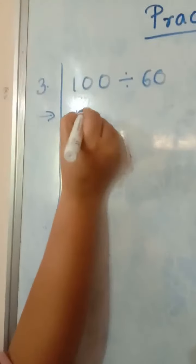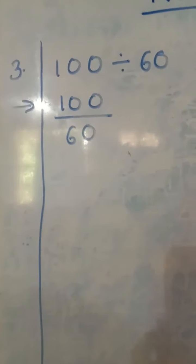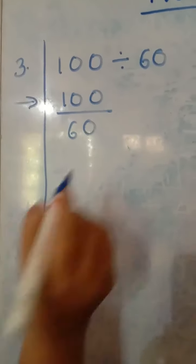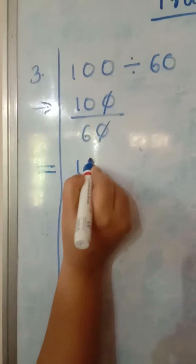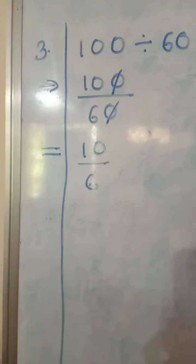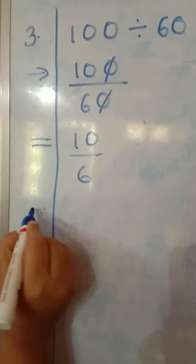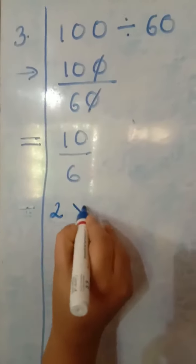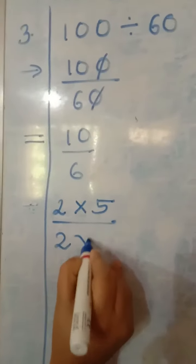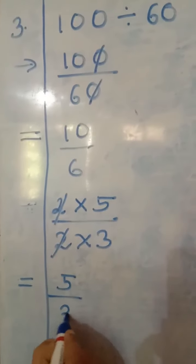Now we go to the third sum. First write it in fraction form: 100 upon 60. Here there are zeros, so first cancel the zeros to simplify the fraction — one zero with the other zero — leaving 10 upon 6. There is no negative sign, so it is simple division. Now 10 and 6 — which table do they appear in? They come in the 2's table: 2 fives are 10, 2 threes are 6. So the answer is 5 upon 3.